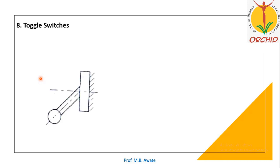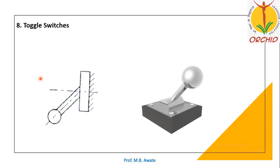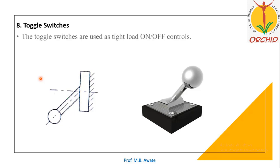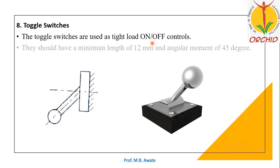Toggle switches are used as light load on/off controls. They should have a minimum length of 12 mm and an angular movement of 45 degrees. The minimum length is 12 mm — it could be more than that — and the angle of movement is 45 degrees.